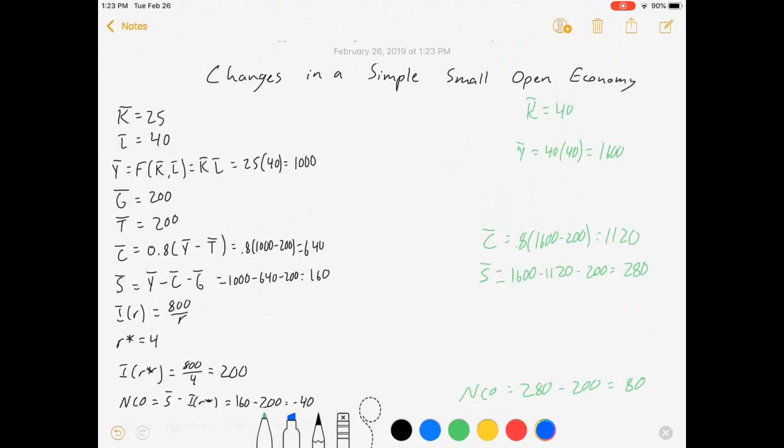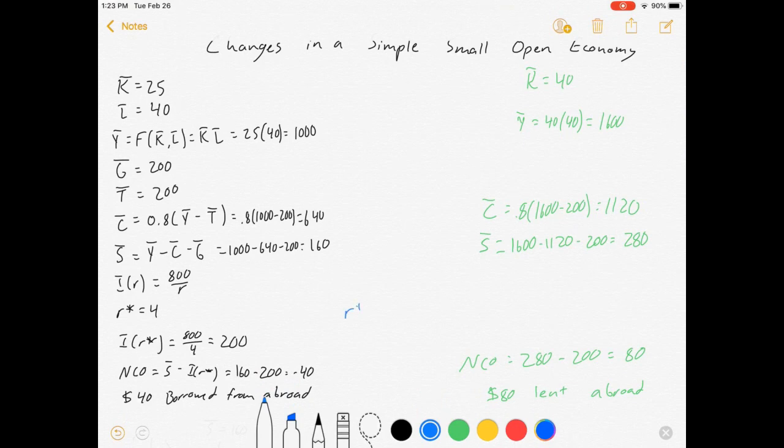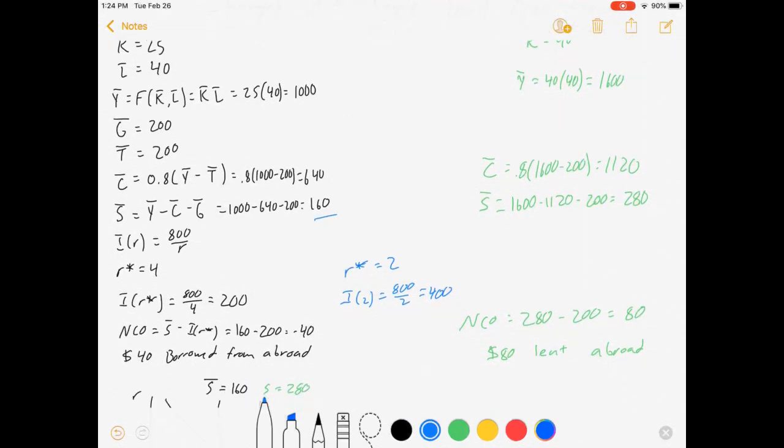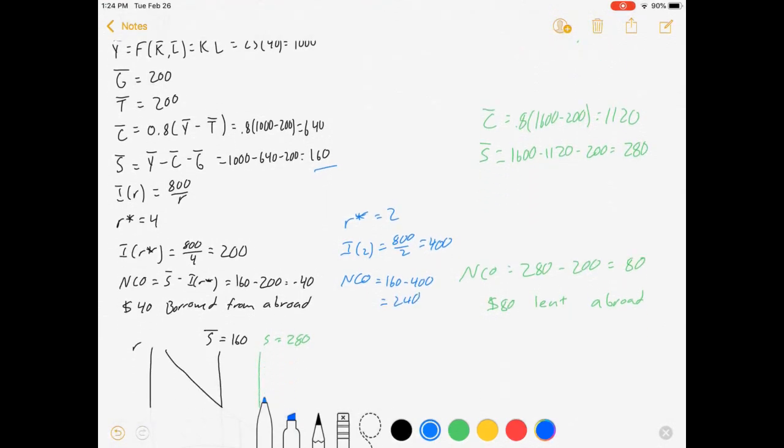Last change. Let's do one more. This time, we will change that interest rate. We're going to leave capital, labor, everything else fixed. We're just going to change r star and make it equal 2. Well, this changes how much we invest. 800 over 2 equals 400. Our savings originally was 160. So our NCO net capital flows, 160 minus 400 equals minus 240. We're borrowing 240.